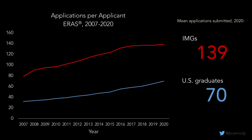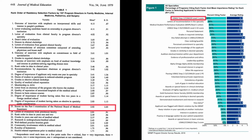Because applying to more programs than an otherwise identical competitor confers a relative advantage in this competitive space, we have an arms race where each year students submit more and more residency applications. By 2020, the mean number of applications submitted — across all applicants and all specialties — was 70 for USMD students and 139 for international medical graduates. Naturally, as programs became more and more overwhelmed with applications, they gravitated to the only numeric measure they could apply to every single applicant: the Step 1 score.